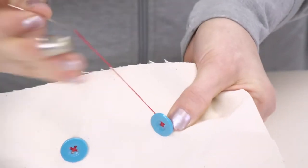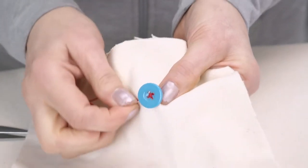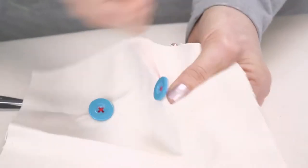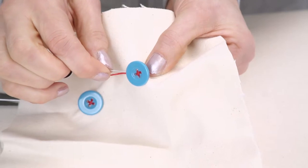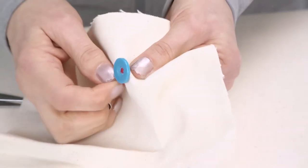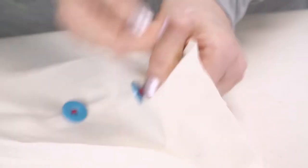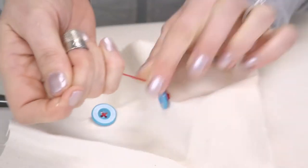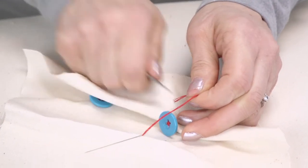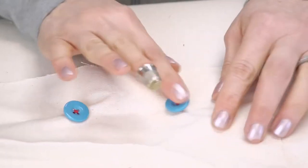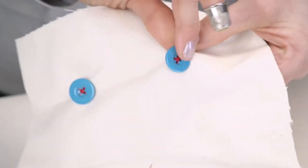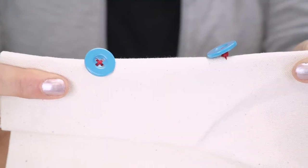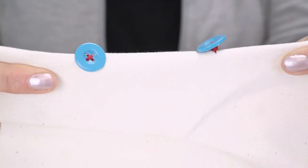And we just knot off this button the same as the other one. And then a couple of backstitches. Two, three, trim. And you can see the difference how this is a raised button, the shank, compared to our flat.